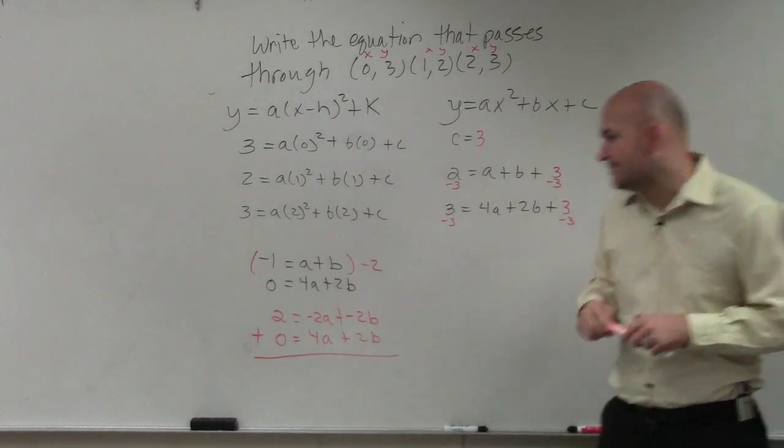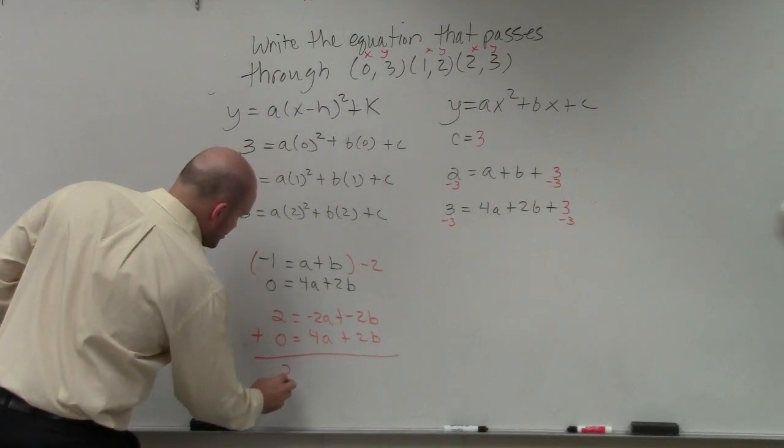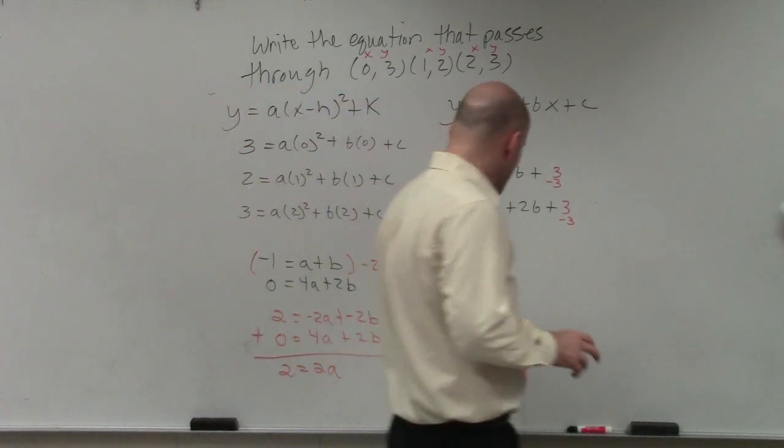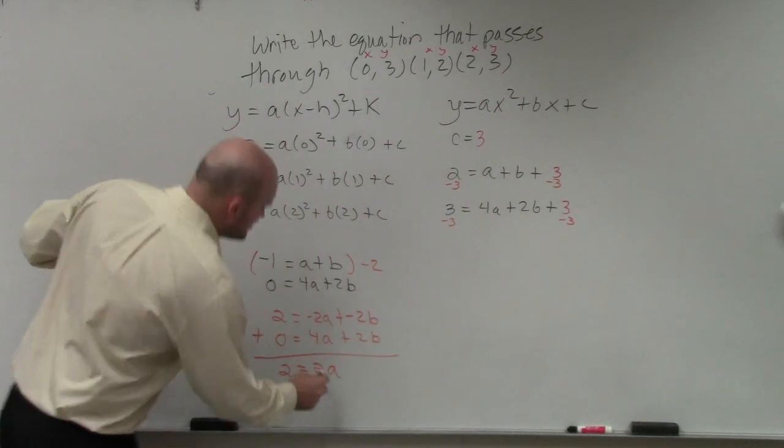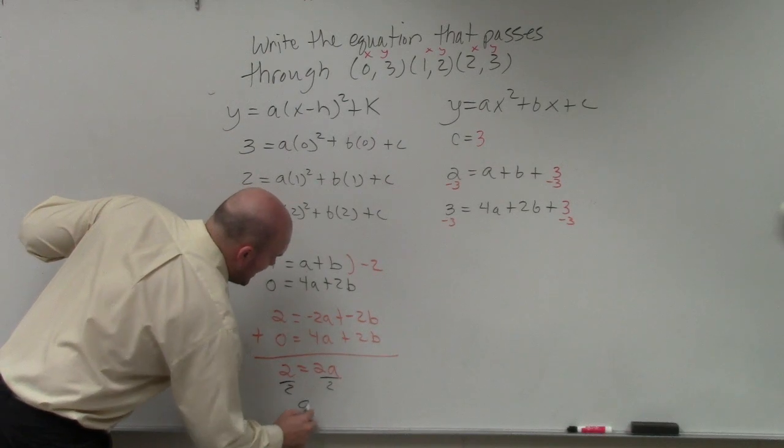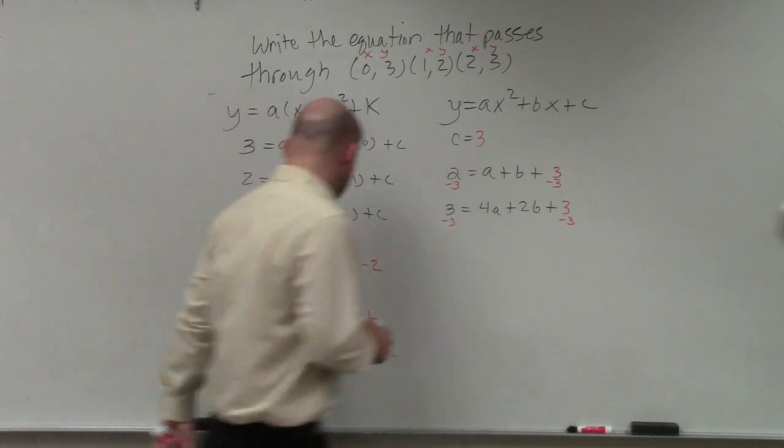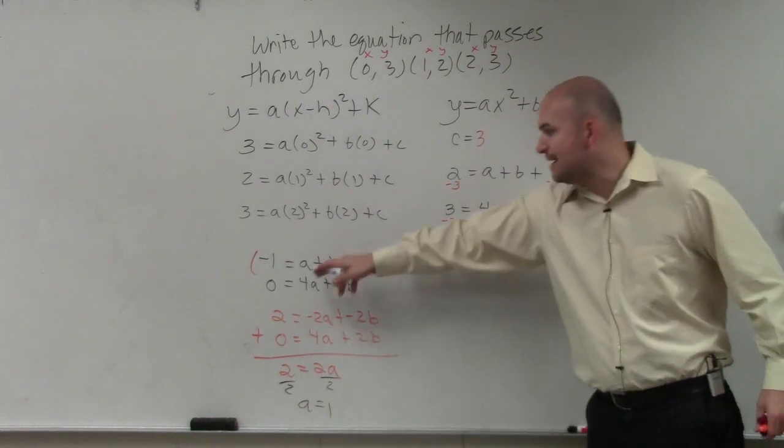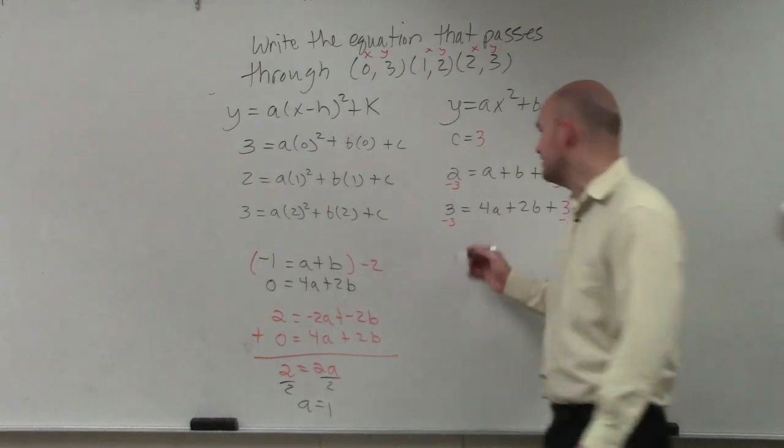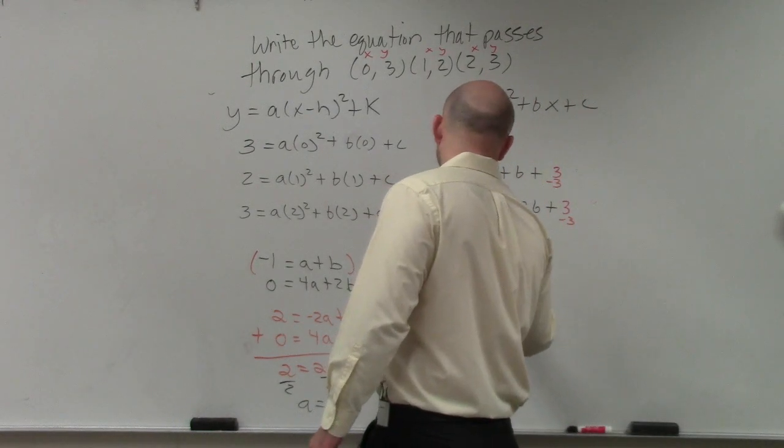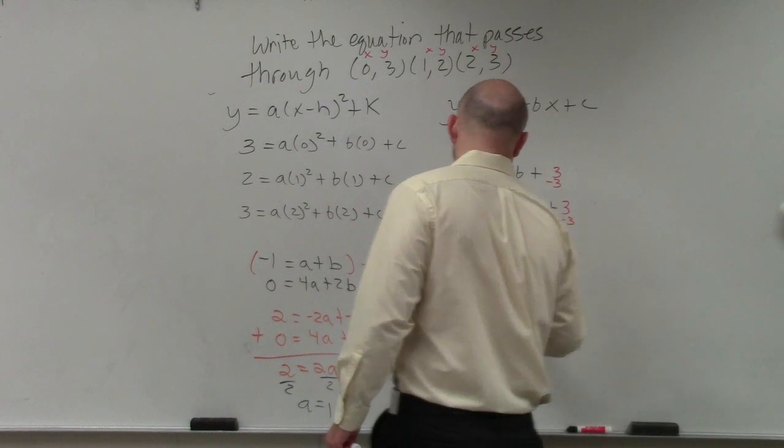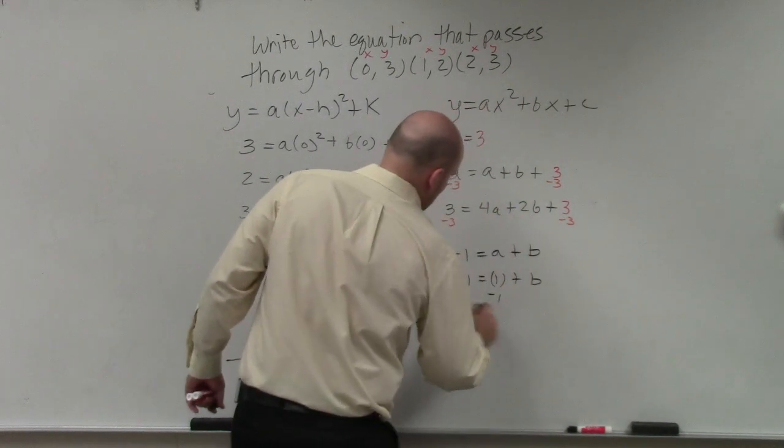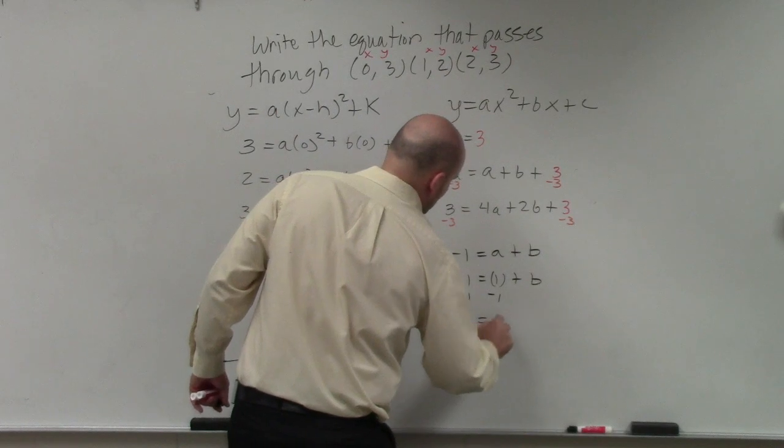Now I add them vertically, and I get 2 equals 2a. So now to find a, I simply just divide by 2. a equals 1. Then once I know what a is, I can plug 1 back into one of my equations to solve for b. So I'll go to negative 1 equals a plus b. Negative 1 equals a plus b. Subtract 1, subtract 1. Negative 2 equals b.